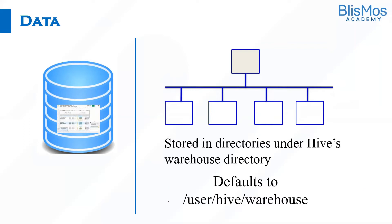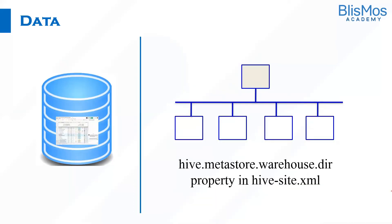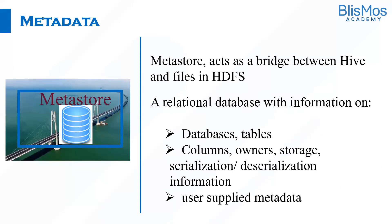Whenever we work with Hive — whenever we create a table in Hive, whenever we insert the data into the table — all those files are stored in the user Hive warehouse directory. If you notice here, without setting any directory, if you just create a database and within the database create a table, then that table is created under this directory — the user Hive warehouse directory — and within that table we have the data.